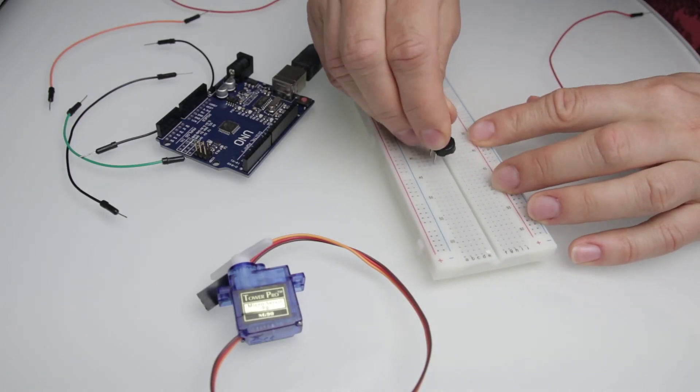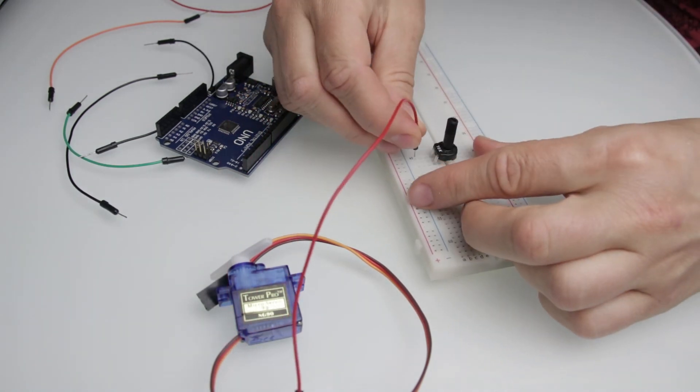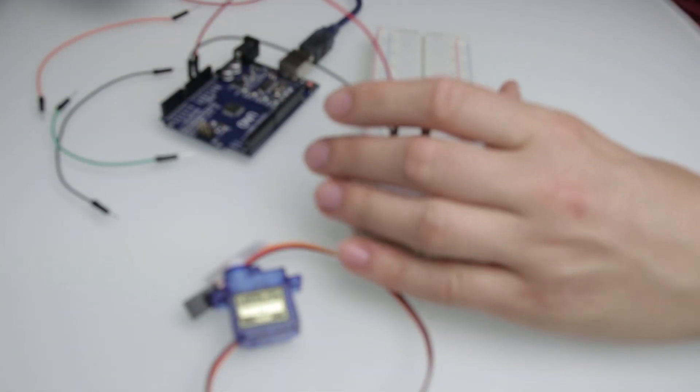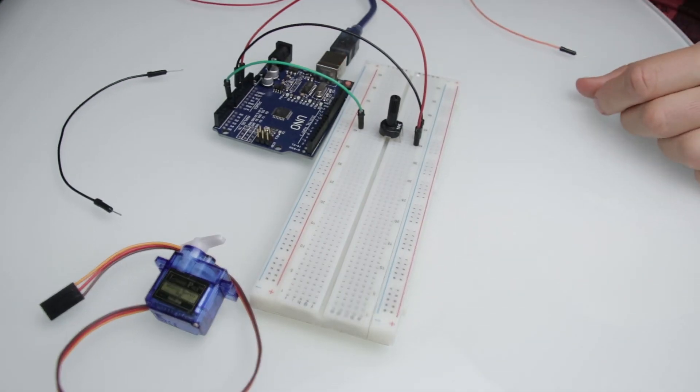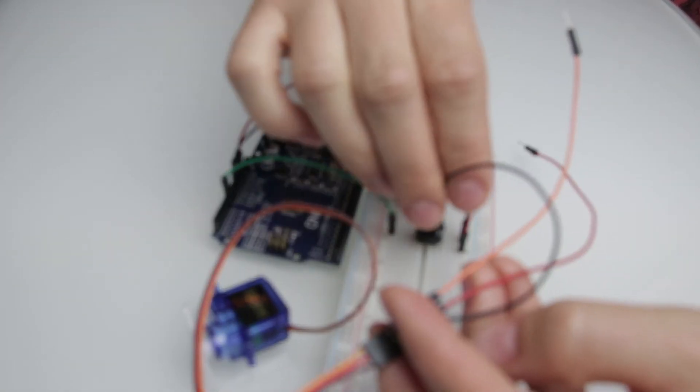Let's do the wiring now. I am first placing the potentiometer on the breadboard and connecting it to 5 volts. The other side of its resistive track will connect to the ground. Remaining pin will connect with pin A0. Now let's connect the servo the same way as in the first example.